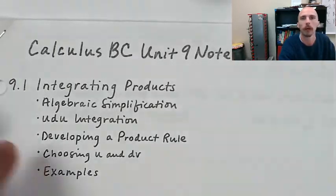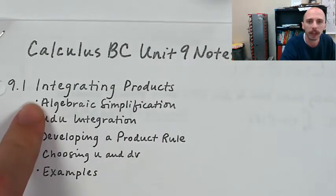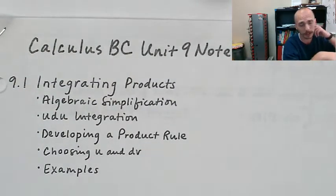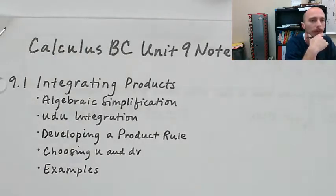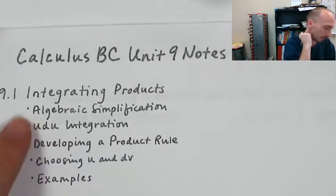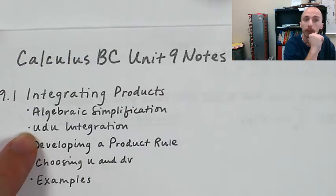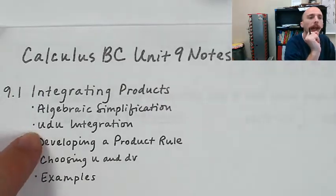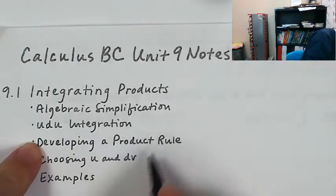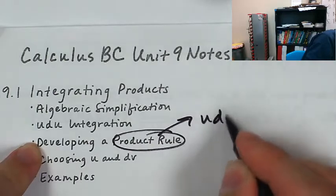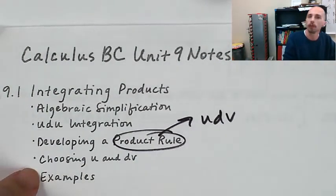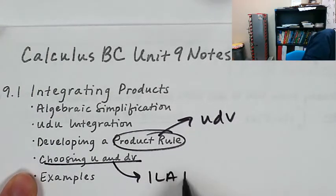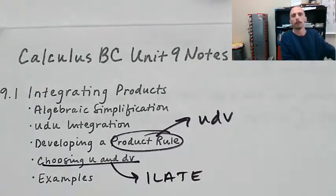We started off with integrating products. We had algebraic simplifications where we distributed before anti-differentiating. Then we learned about U-substitution, change of variability. We did more practice on that. Then we developed a product rule, integration by parts, UDV. We learned how to choose U and DV using I-LATE, and then we did a bunch of examples.